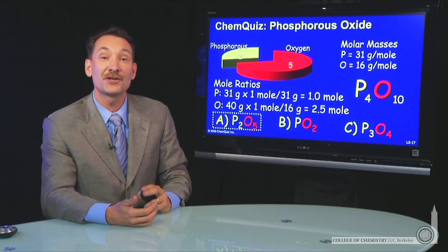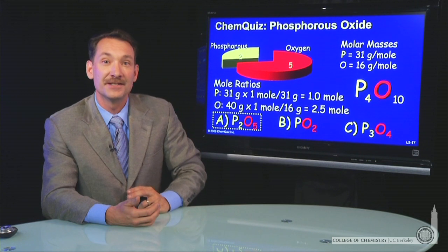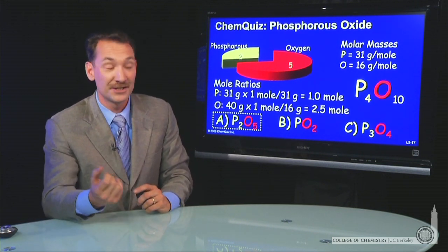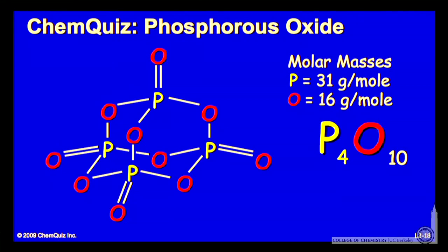It turns out the actual molecule is P4O10. So the molecular formula is P4O10, and that has a structure that looks like this. A very complicated molecule, P4O10, four phosphorus atoms for every 10 oxygen atoms in that molecule.